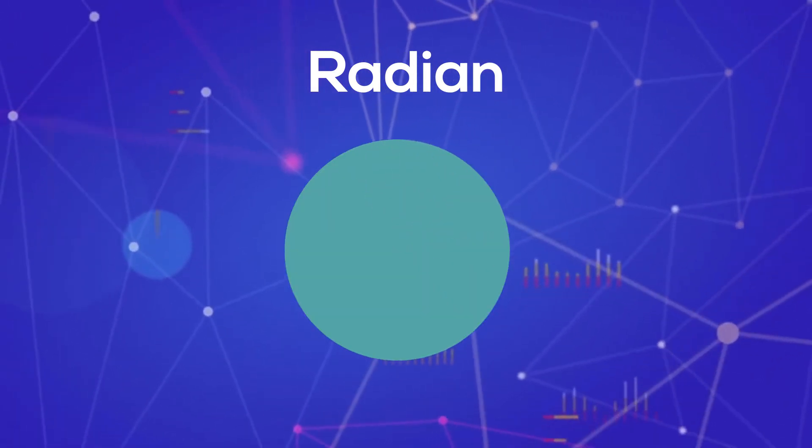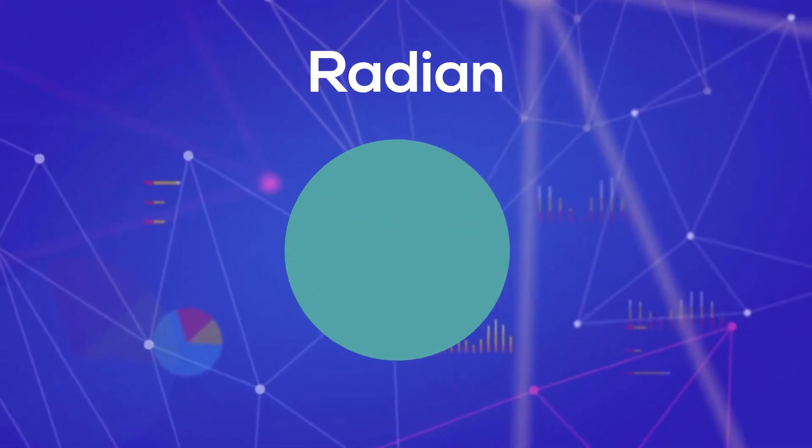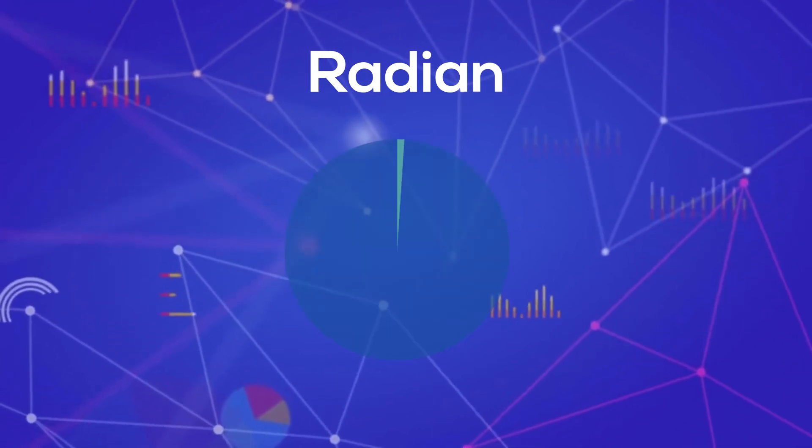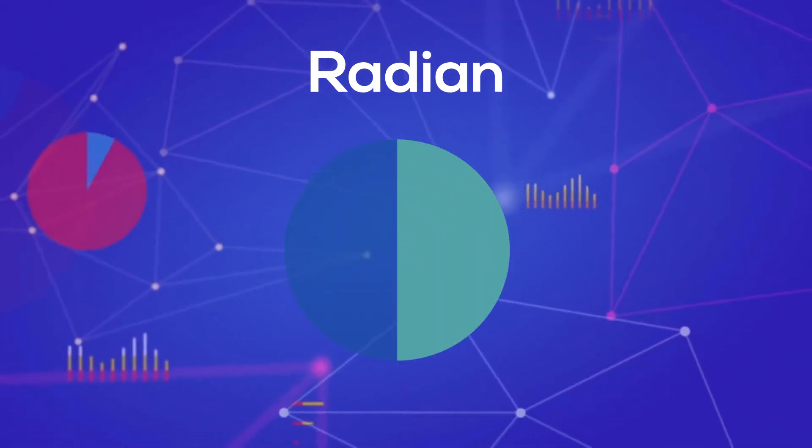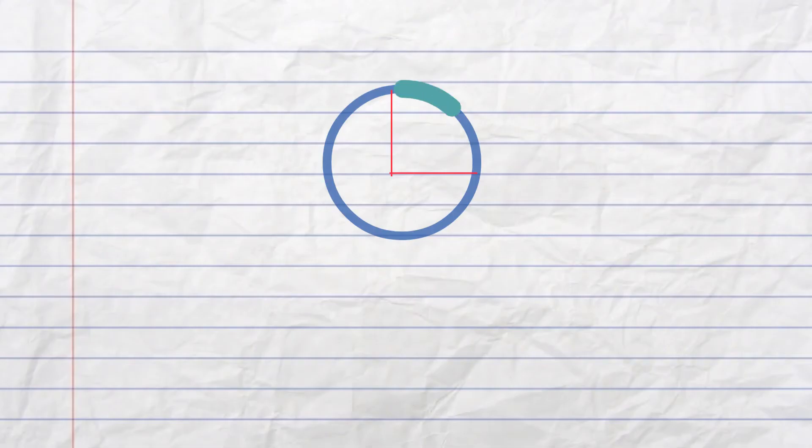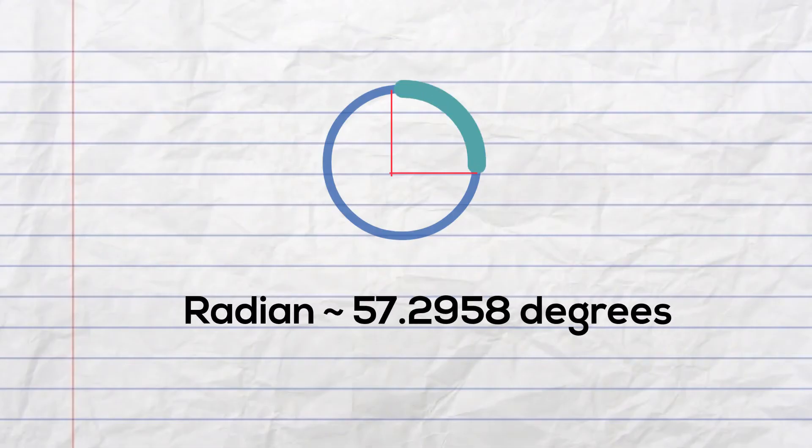The radian is the SI unit for measuring angles. The radian is a method of measuring angles using the radius as the length of the arc. A radian equals approximately 57.2958 degrees. The most common symbol for the radian is RAD.